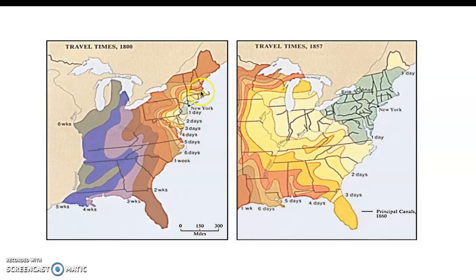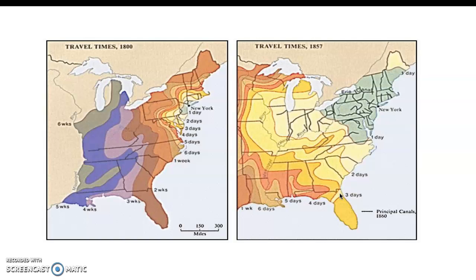This really shows the growth of travel across all industries. In the 1800s, if you start in New York, the green area shows how far you could get in a day, yellow in two days, three days, four days, and so on. To get down to Florida would take you at least two weeks. But by 1857, thanks to the railroads, you can go from New York to Jacksonville in three days, New York to Canada in one day, and New York to the Mississippi River in two days. Pretty impressive.